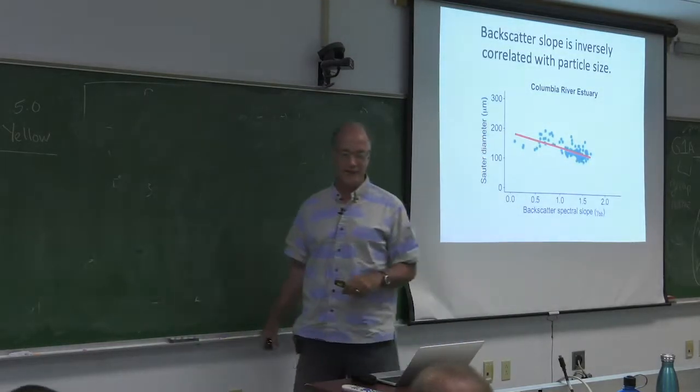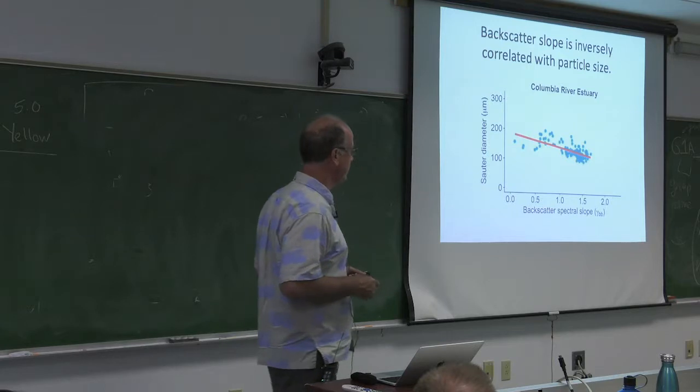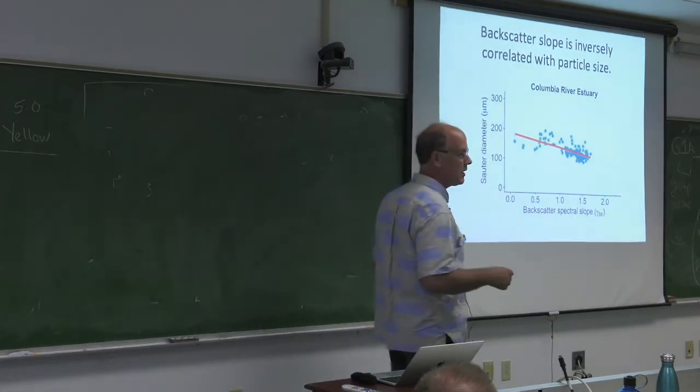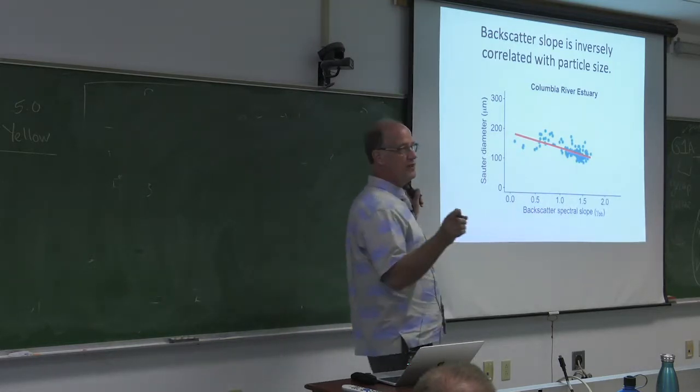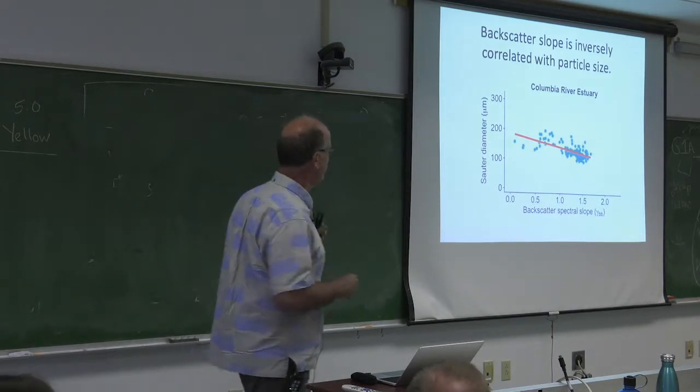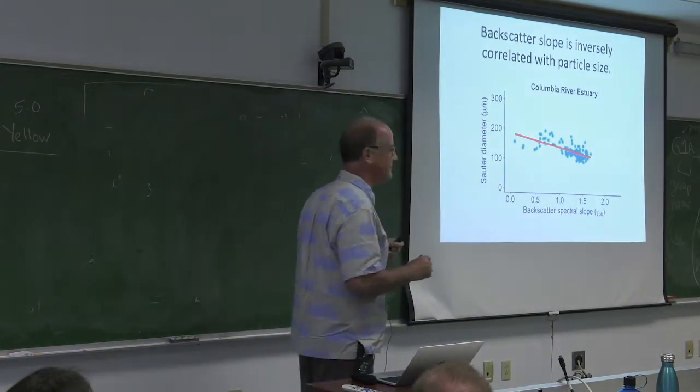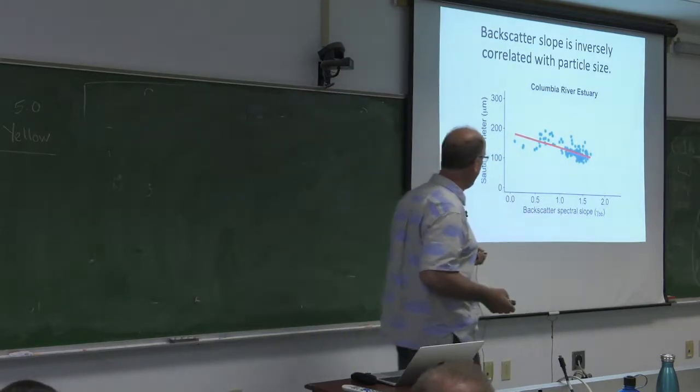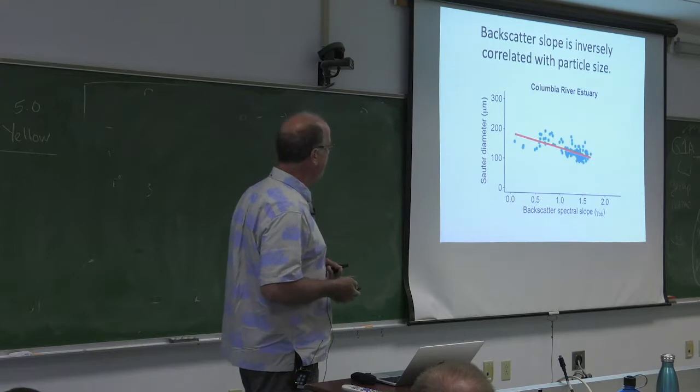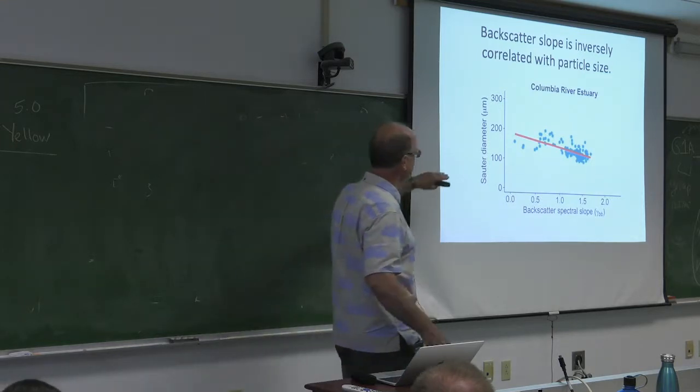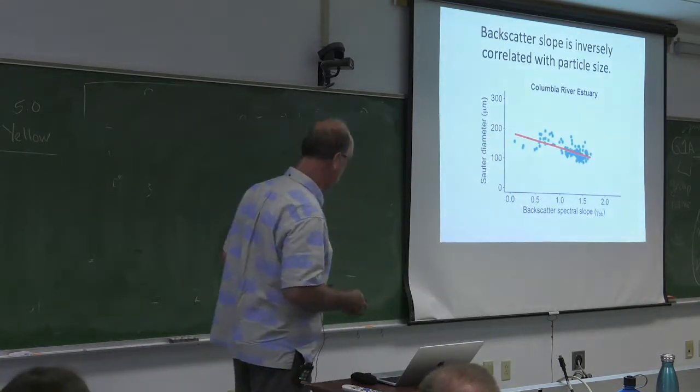The next thing we've been working on is the backscatter slope and the slope of the attenuation. Backscatter slope is inversely correlated with particle size. This is data from the Columbia River. And what it's showing is Sauter diameter - it's a representation of the particle size in suspension that takes into account the entire size range. And it shows the backscatter spectral slope, gamma BB. And what it shows you is that the spectrum flattens as you get to bigger and bigger particles. So you can use that to interrogate suspensions.